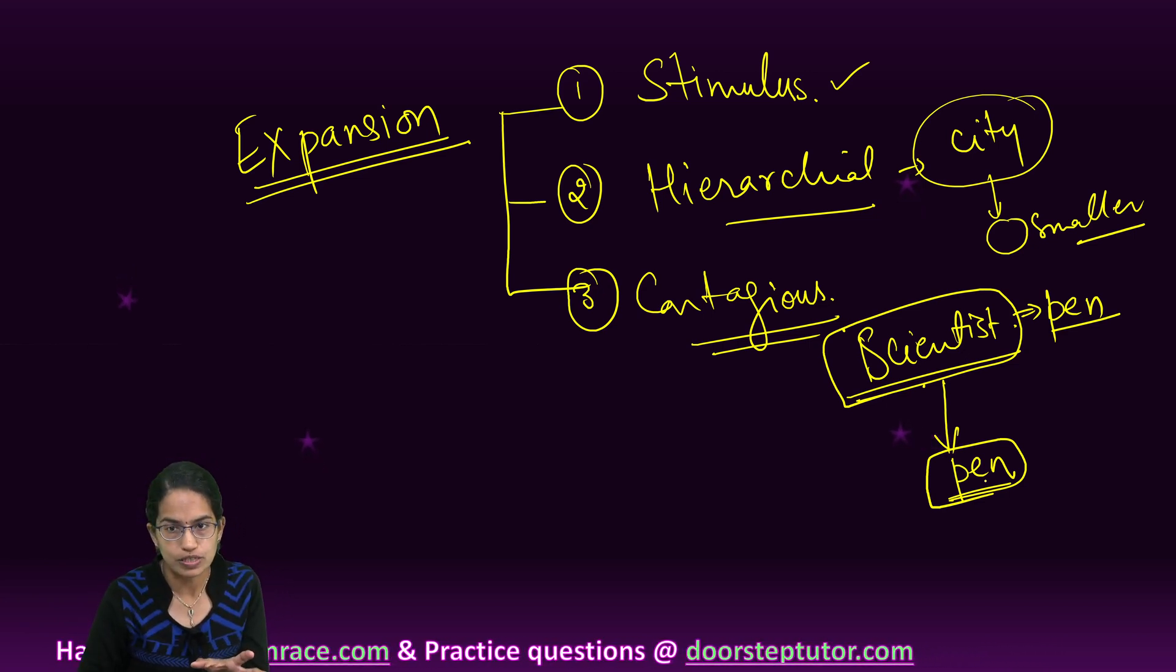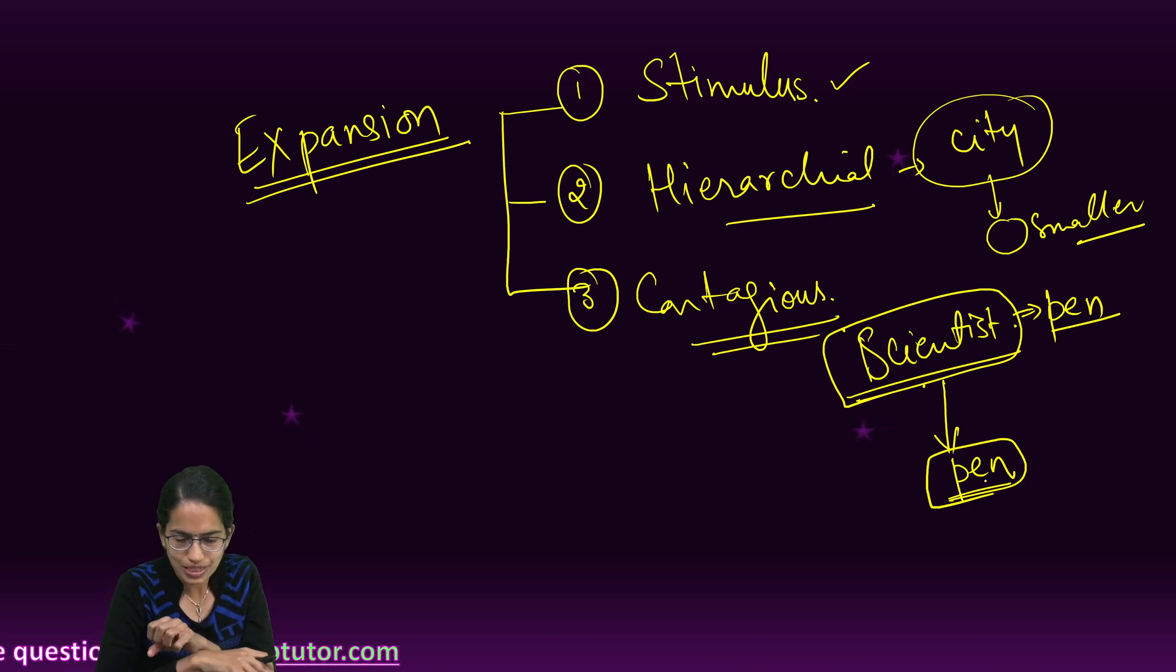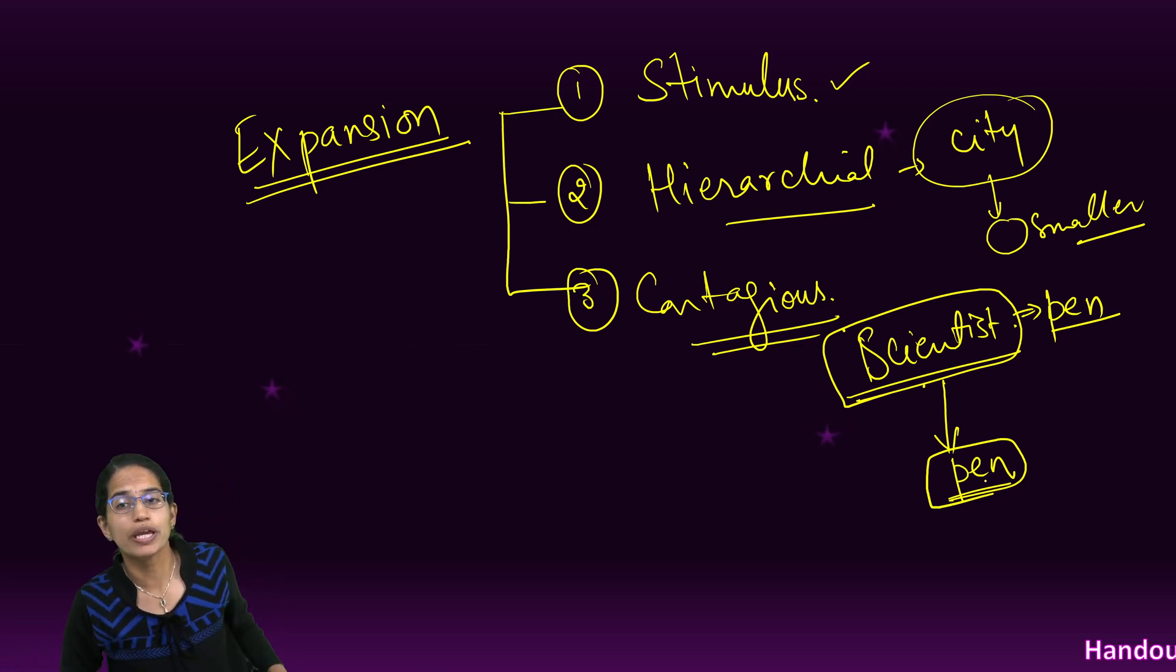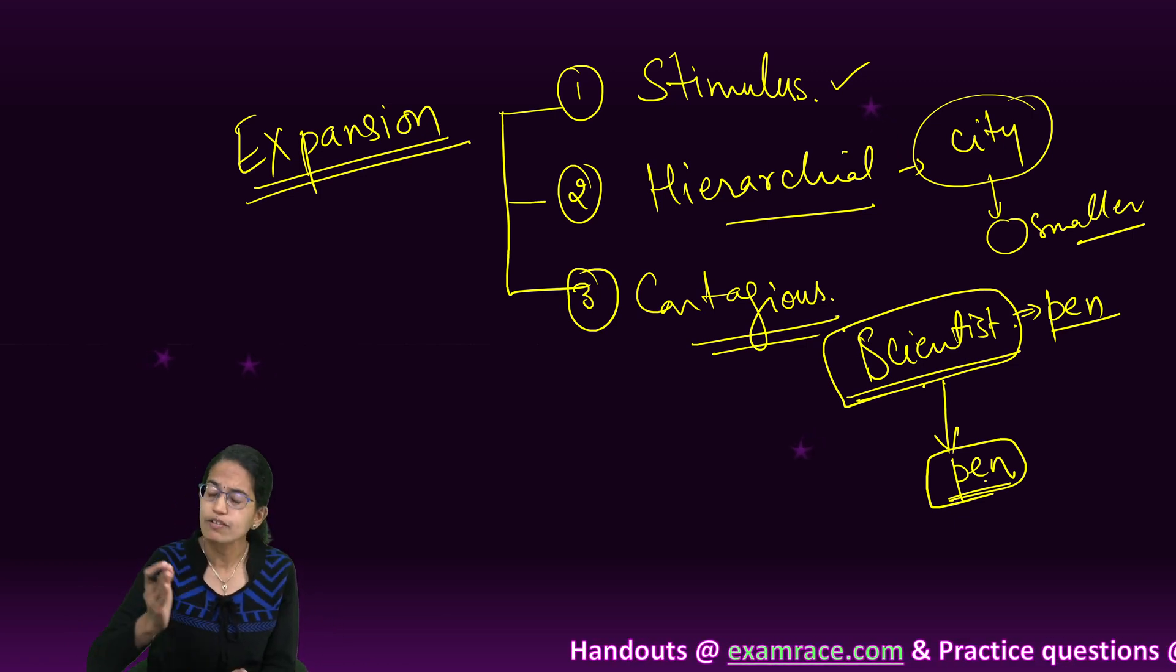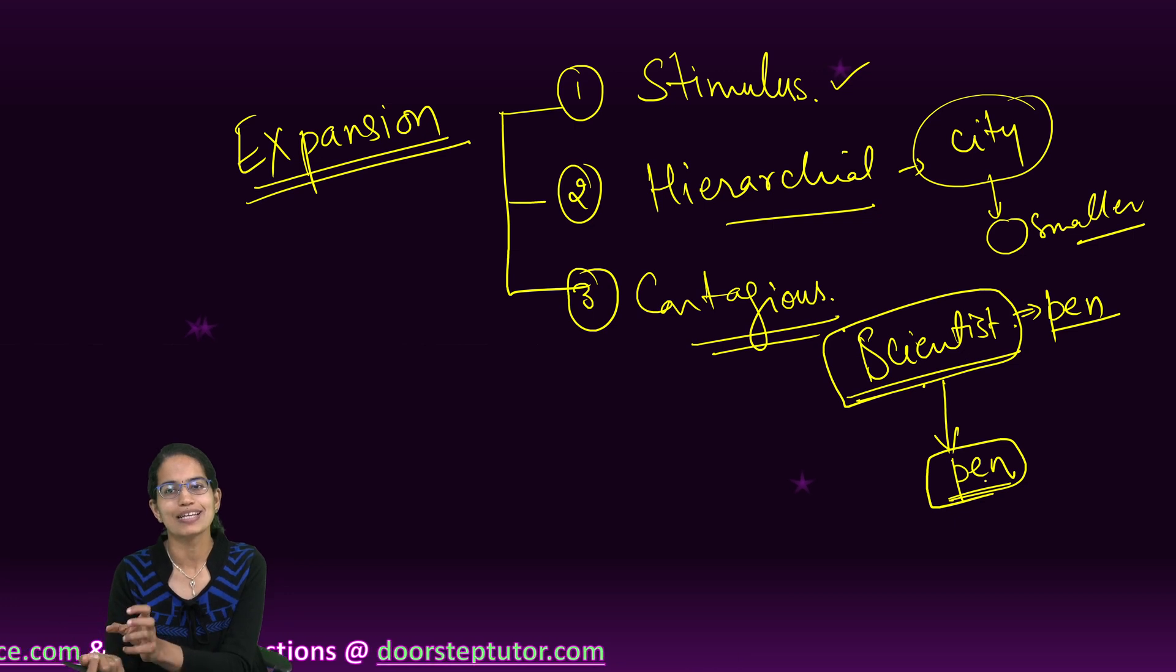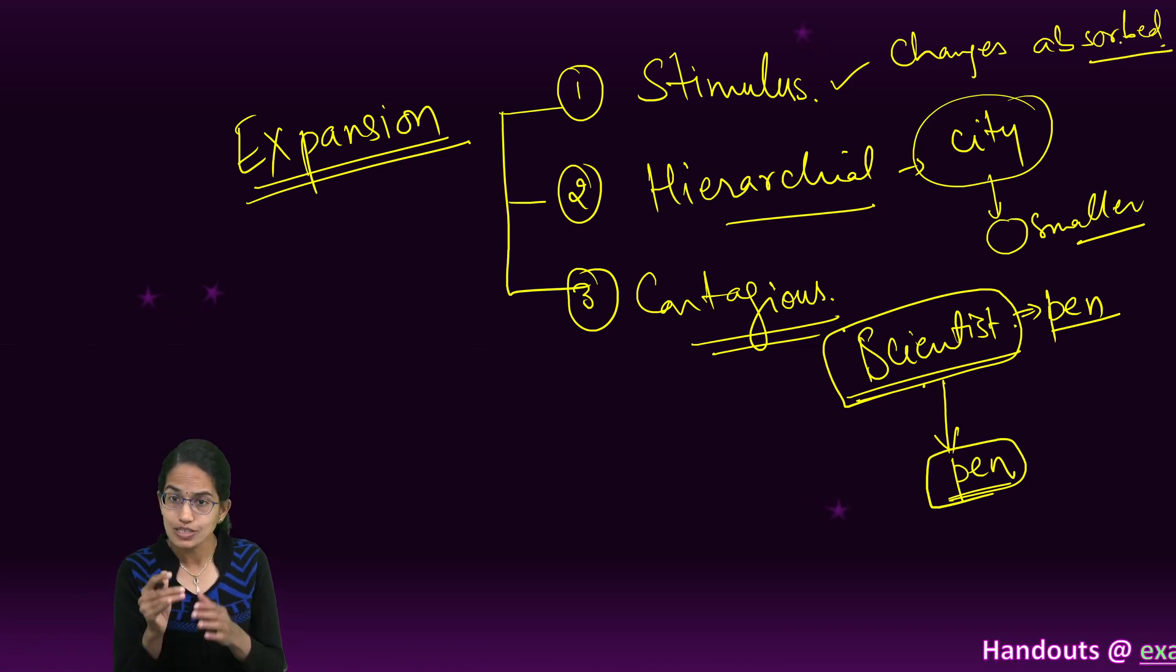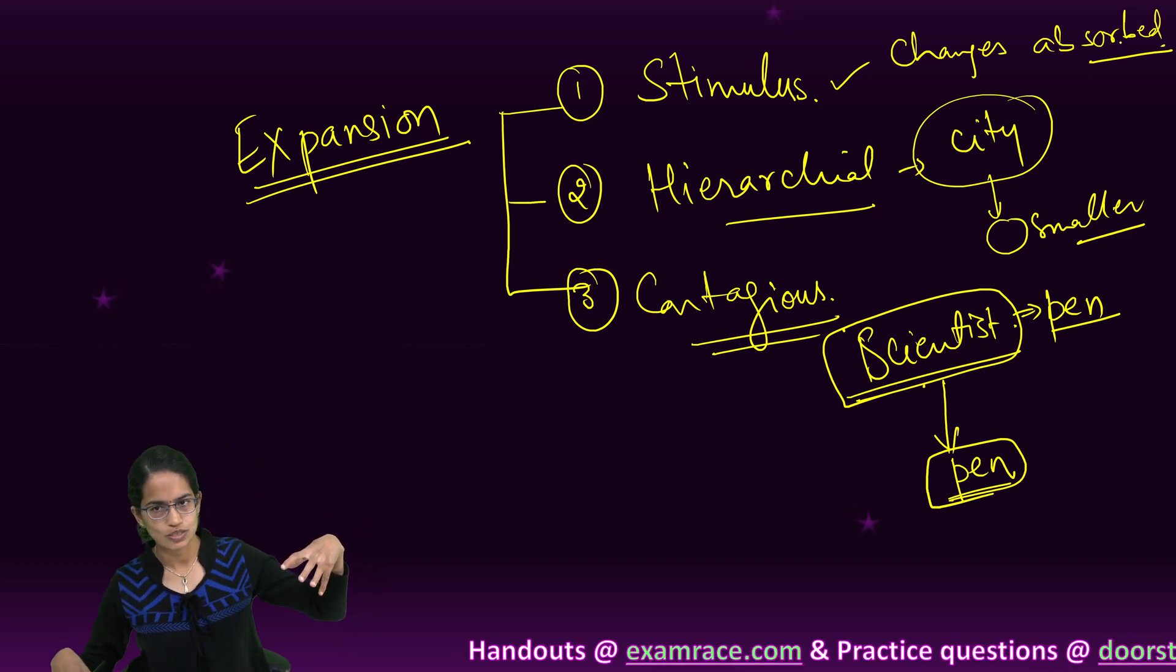I repeat the three forms of expansion. In all these three cases, culture is being expanded, it is being spread. The first is stimulus where it is actually moving from one region to another, but it is not only just moving or spreading, it is incorporating the changes within. Changes are absorbed and modifications are made under stimulus expansion. Under hierarchical expansion, it moves from a bigger city to a smaller city.